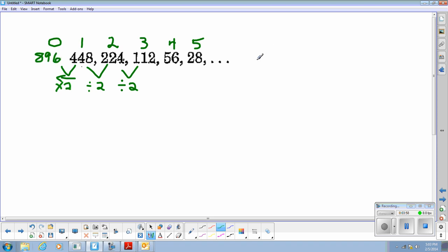So if I was making this one now, I would make my t-table and I would go x, y, and I have zero term is 896. And term 1 is 448. And term 2 is 224. And term 3 is 112.